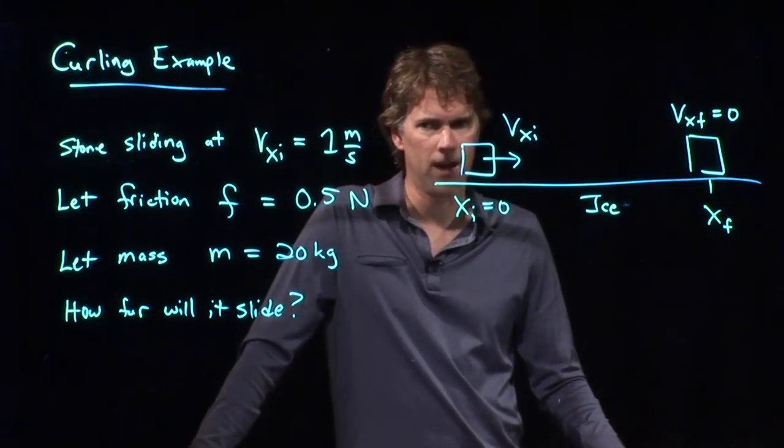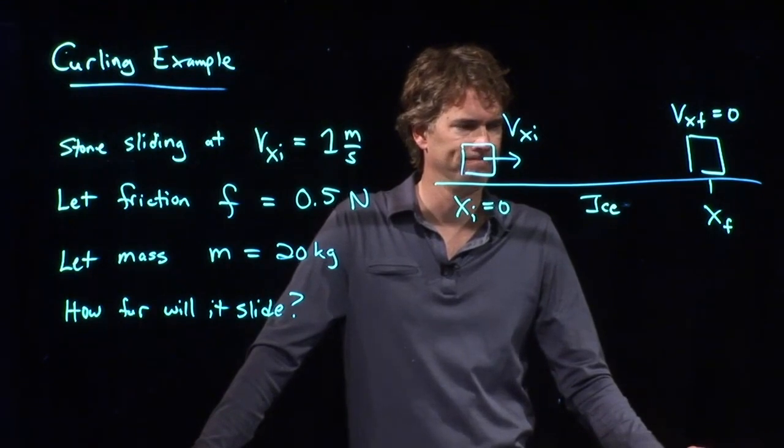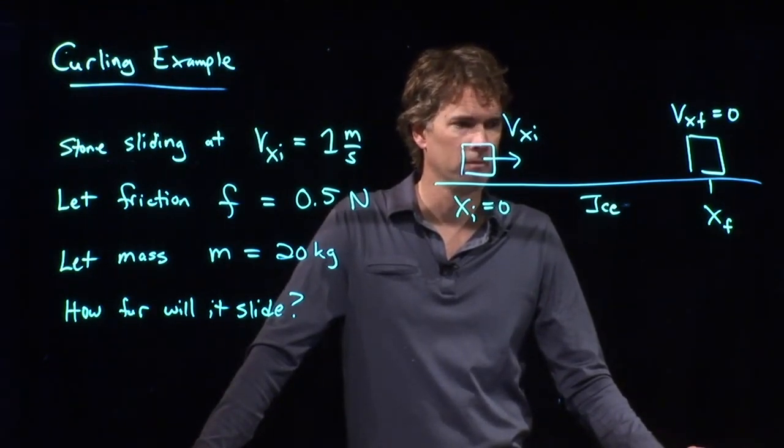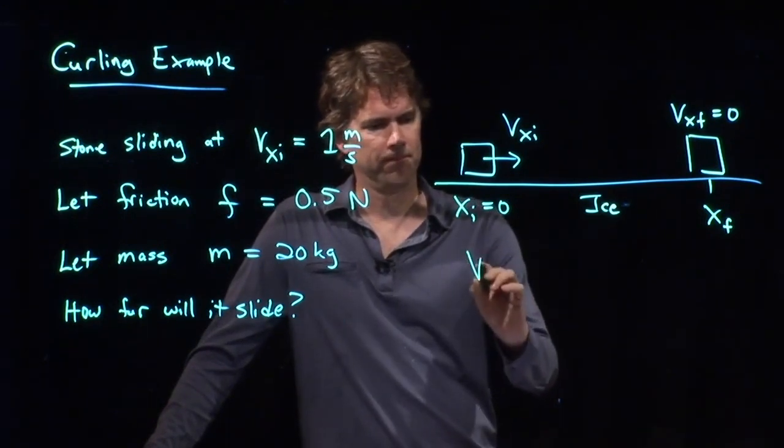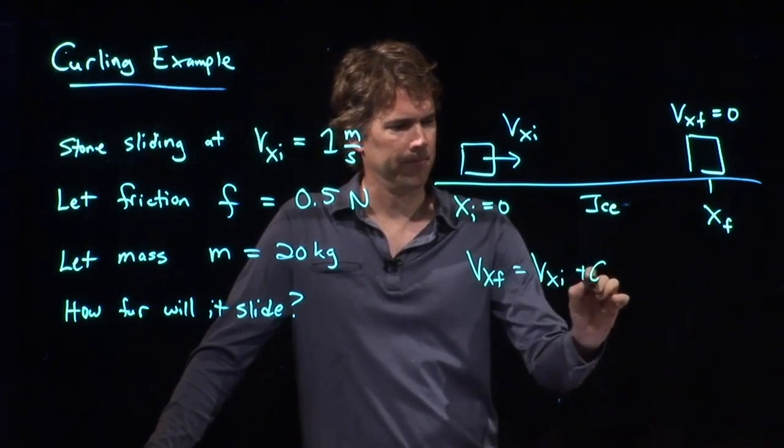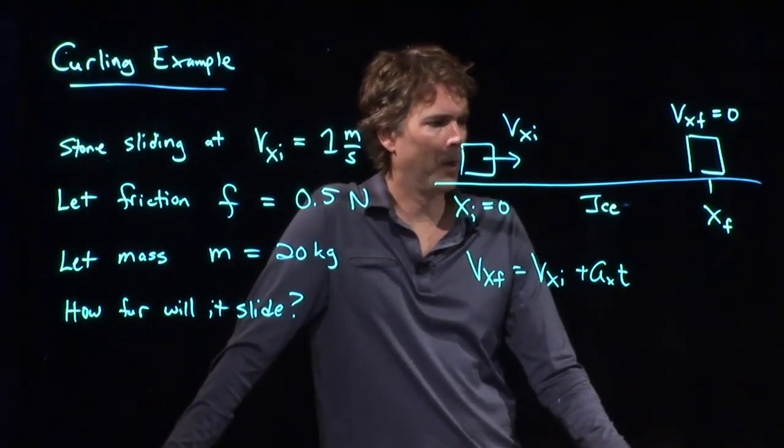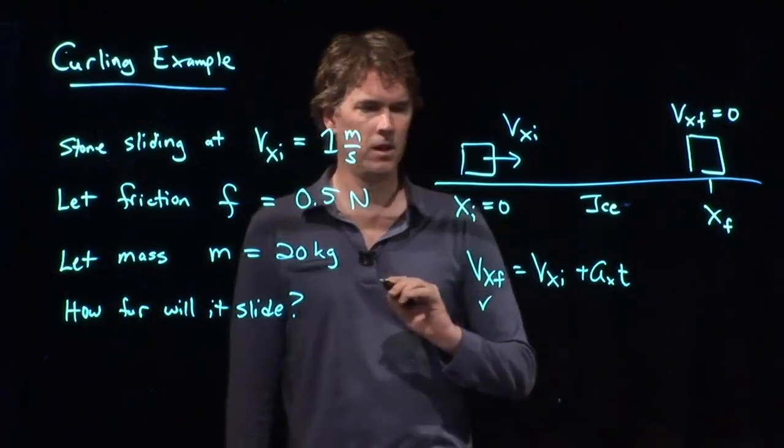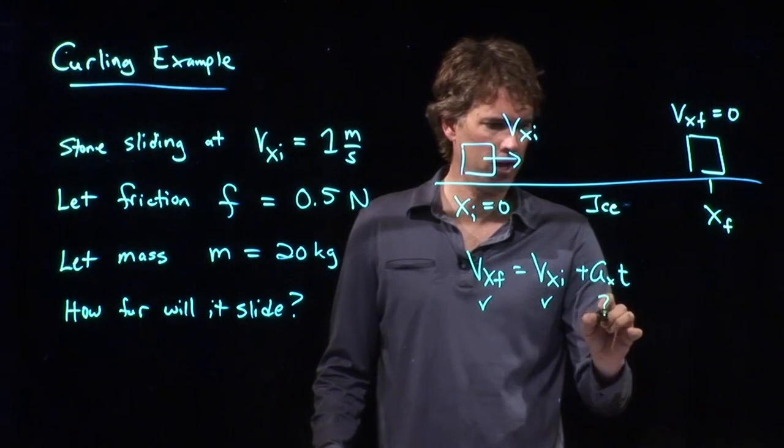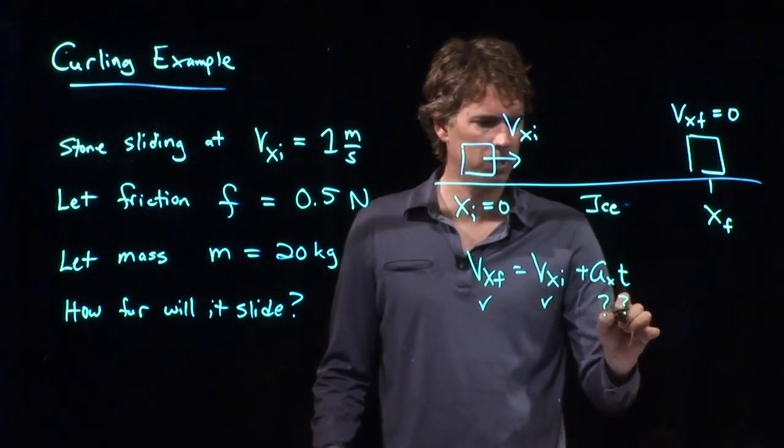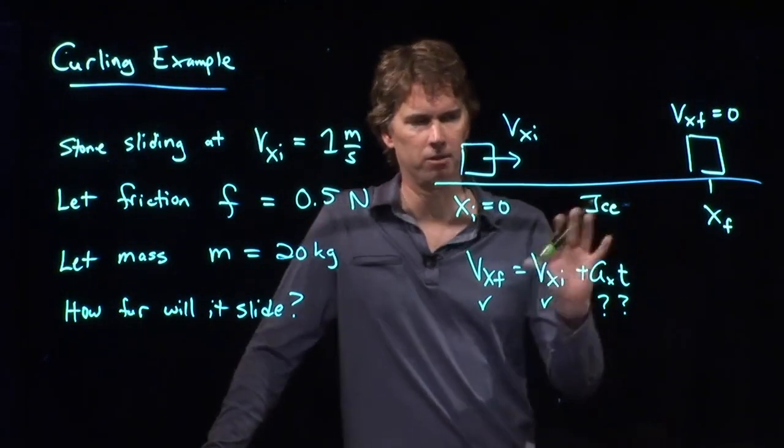So, all right, what should I do next? Allie, what do you think? What should be my next approach? Which one do you like? VX final is equal to VX initial. That one? That's a good one, right? Okay. Let's see what we know in here and what we don't know. We know VX final, that's zero. We know VX initial, that is 1 meter per second. We don't really know AX yet, and we don't know T yet. So not totally sure that equation is going to help us just yet, but let's leave it up there for a second.